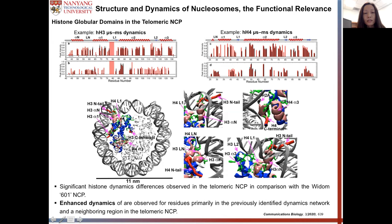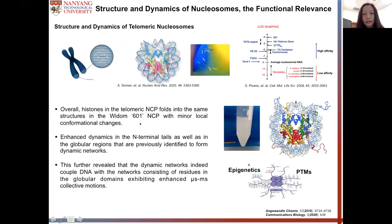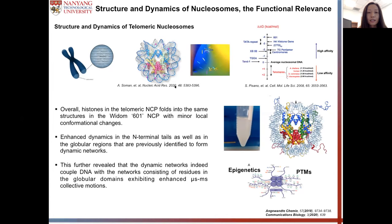Interestingly, those residues actually locate within the dynamic network we previously identified, or in neighboring regions. Overall, the study on the telomeric NCP indicates that the histones in telomere fold into the same structure as in the 601 NCP, with minor local conformational changes in both the core region and the histone tails. The enhanced dynamics observed for the N-terminal tail regions and globular regions overlap with the dynamic network we previously identified, further verifying that this dynamic network couples DNA with the histone core regions.